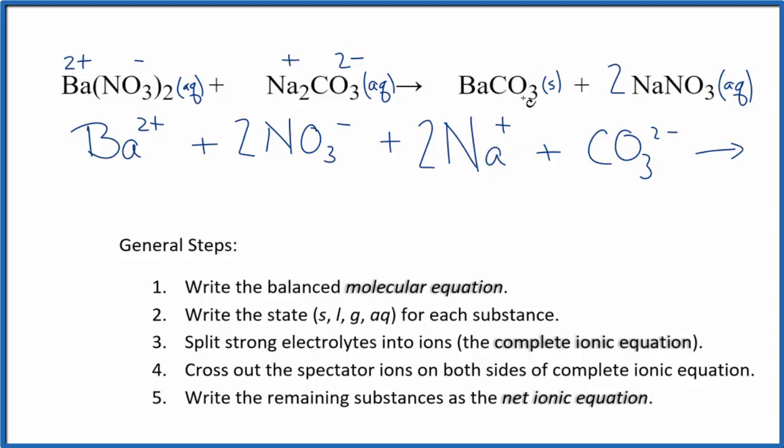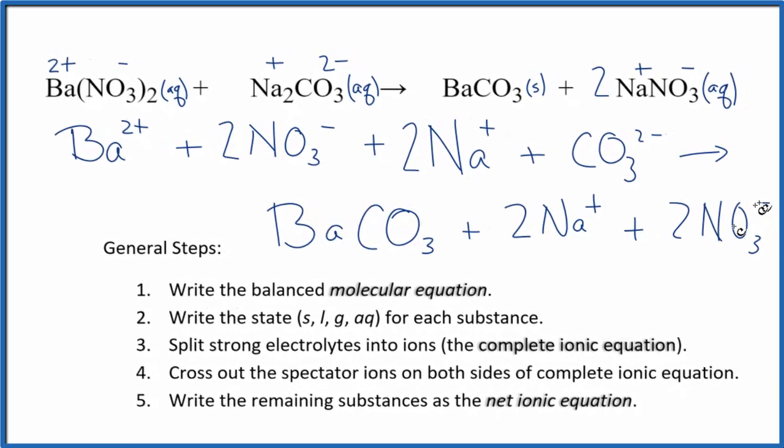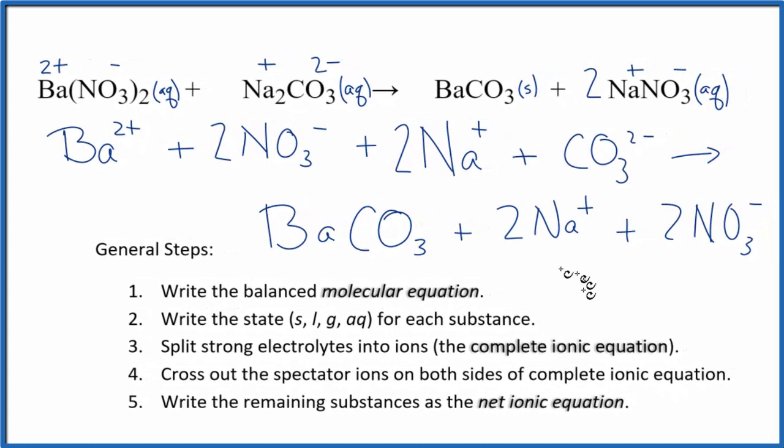For the products here, we said we have a solid. So we're not going to split the solid apart. In fact, in the test tube, it's at the bottom. It's not split apart. It's not dissolved. So it's just a solid. And we write BaCO3. And that's the solid. We said we had a plus and a minus here. So we have 2 sodium ions and then the 2 nitrate ions. So this is the total ionic equation or the complete ionic equation.